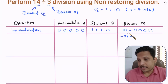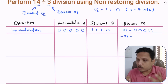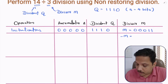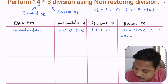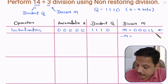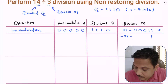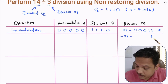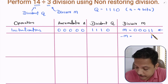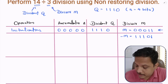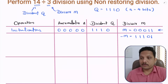We also need -M, which in computers means the two's complement of M. To compute it, copy from the right up to and including the first 1, then complement the remaining bits. So -M becomes 11101. This completes initialization of the data.